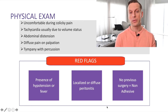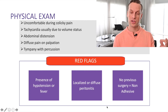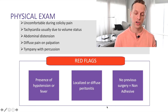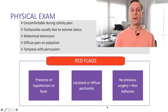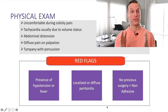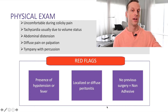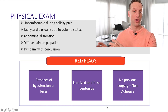When examining a patient with bowel obstruction, also be mindful of red flags. Persistent hypotension or fever suggests an area of bowel may be compromised. Peritonitis — focal tenderness, rebound tenderness, or percussion tenderness — suggests a possibly dead loop of small bowel. And a patient with no history of surgery would place them in the non-adhesive category, which is high risk for serious pathology, such as neoplasm.